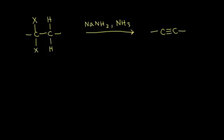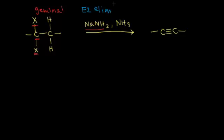Let's look at two ways to prepare alkynes from alkyl halides. Here I have a dihalide where my two halogens are attached to one carbon — we call this a geminal dihalide. This geminal dihalide is going to react with a very strong base, sodium amide, giving us an E2 elimination reaction. This E2 elimination is actually going to occur twice, and we're going to end up with an alkyne as our final product.